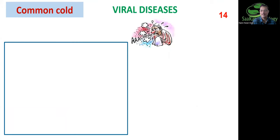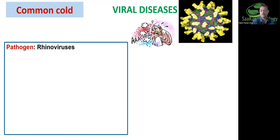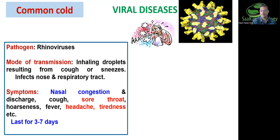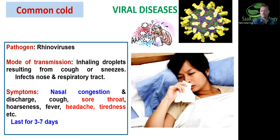Moving to a viral disease — common cold, which is very common. The pathogen is rhinovirus. Symptoms include nasal congestion, running nose, nasal discharge, cough, sore throat, hoarseness, fever, headache, and tiredness. It lasts for three to seven days. You can only mitigate the symptoms — viruses have few medicines against them because viruses do not have their own biochemical pathway; they follow the host's pathway.